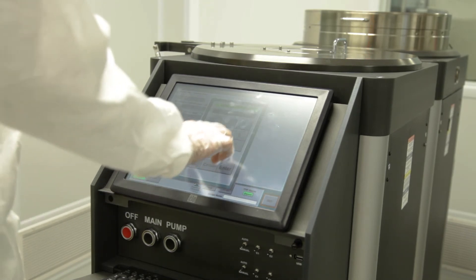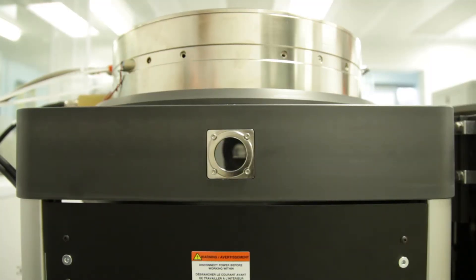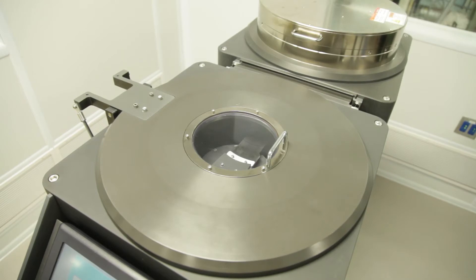The etching rate for a certain material depends on several factors, most importantly the type of gas you use to make the plasma. Gases with fluorine, for example, are good at etching silicon-based materials, where gases with chlorine are better at etching metals. Nanofabrication Kingston has both of these types.